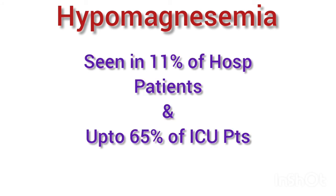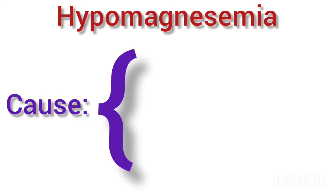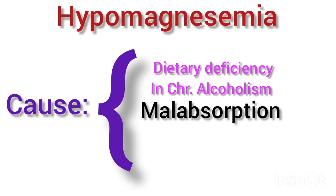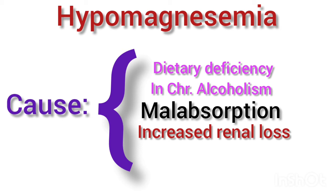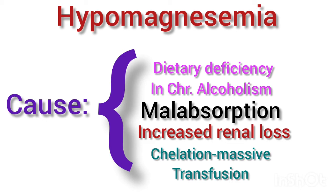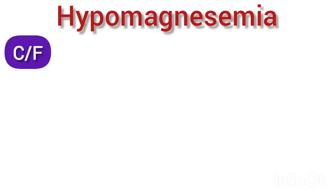Hypomagnesemia is quite common and seen in about 11% of hospitalized patients and up to 65% of patients admitted in the intensive care units. Hypomagnesemia may be due to dietary deficiency in cases of chronic alcoholism, gastrointestinal malabsorption, increased renal losses, or citrate binding in cases of massive transfusion.